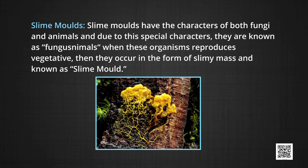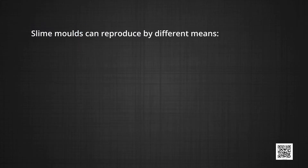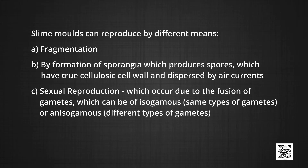Slime molds have characters of both fungi and animals and are known as fungus animals. When reproducing vegetatively, they occur as a slime mass. They are of different colours due to different pigments, and occur in moist, cool, damp places around dead and decaying leaves — hence they are saprophytic Protists. Sometimes they occur as a multi-nucleate amoeboid mass of protoplasm called plasmodium. Slime molds reproduce by fragmentation and formation of sporangia producing spores with true cellulosic cell walls, dispersed by air currents. Sexual reproduction occurs by fusion of isogametes or anisogametes.